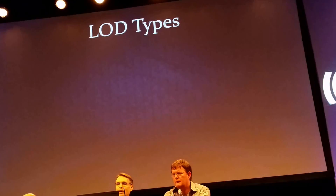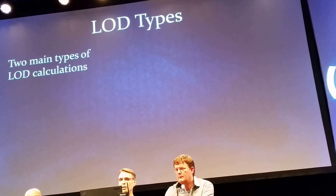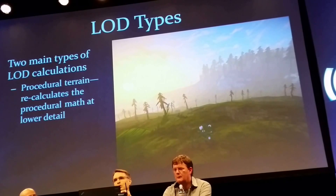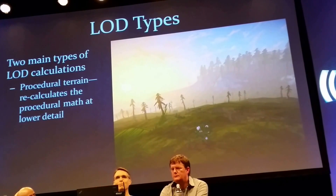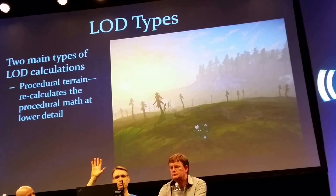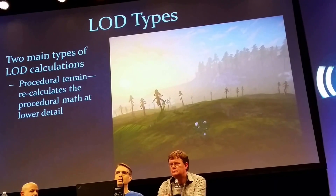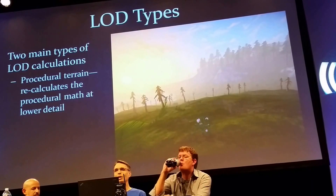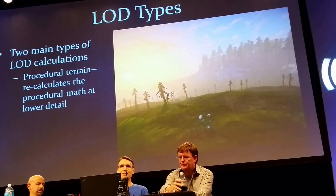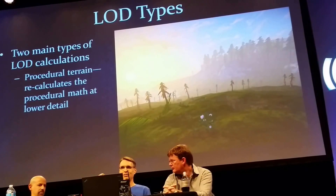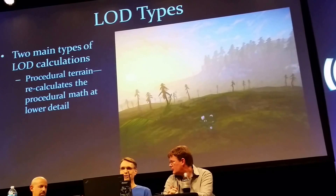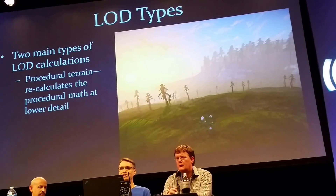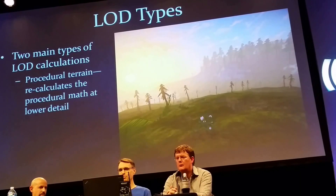There are a couple of different types of level of detail in the game. The first type is what you're seeing when you see these beautiful far-off vistas with mountains and trees — the procedural terrain. That is actually calculated based on a mathematical function with a lot of input to it. We can recalculate that mathematical function at a lower resolution to get the exact points where those boxes should be in the distance. That's the easier of the two, and it has more accurate results.